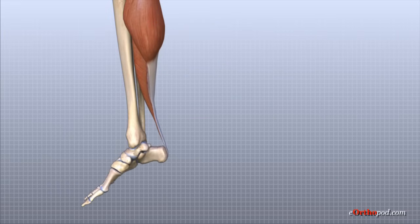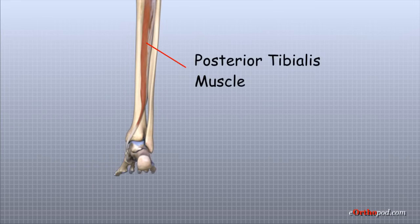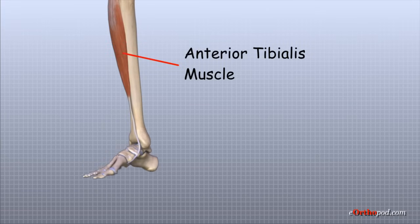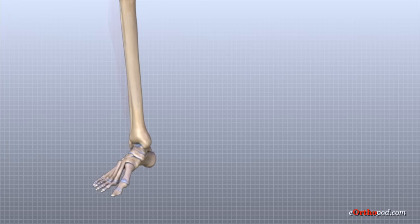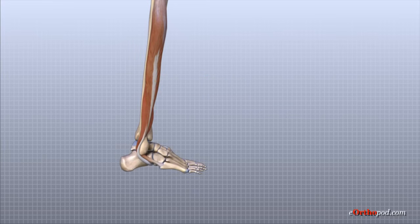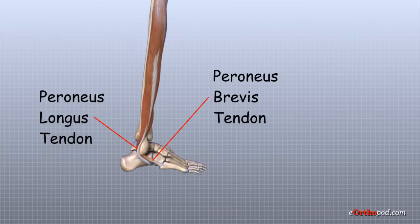The posterior tibial tendon attaches the posterior tibialis muscle in the calf to the underside of the foot. This tendon helps support the arch and allows us to turn the foot inward. The anterior tibial tendon attaches the anterior tibialis muscle to the foot and allows us to raise the foot. The two peroneal tendons run behind the lateral malleolus and help turn the foot down and out. These are called the peroneus longus and the peroneus brevis. The peroneus brevis is the shorter of the two and attaches to the base of the fifth metatarsal, while the peroneus longus runs further before attaching under the foot.